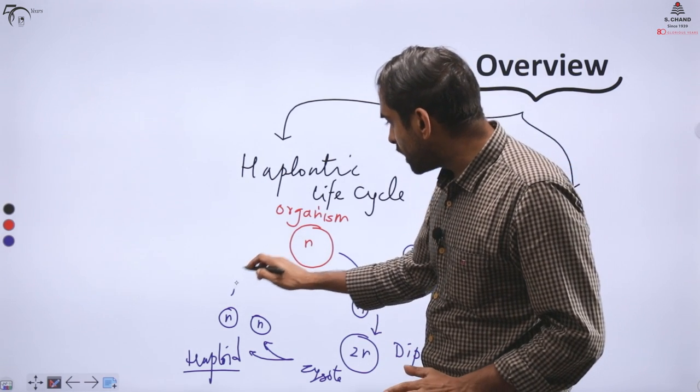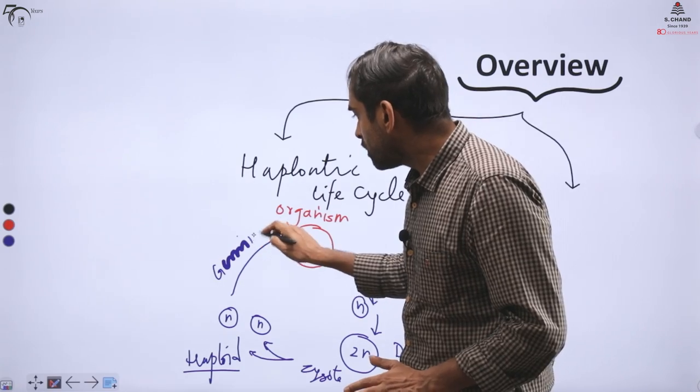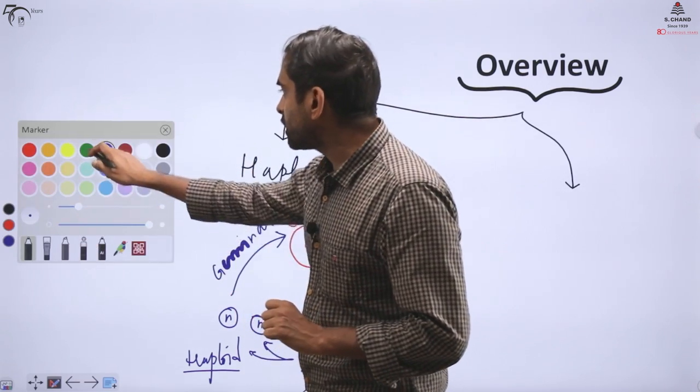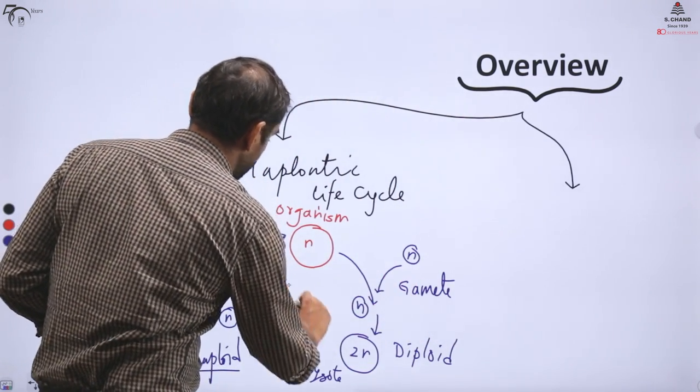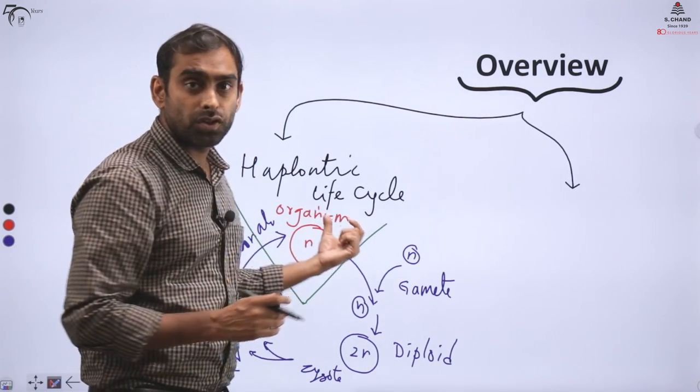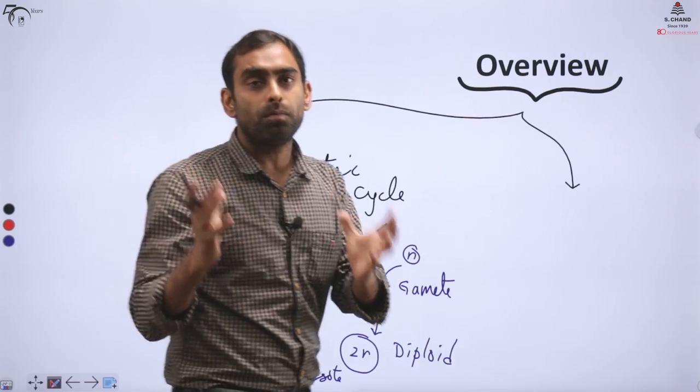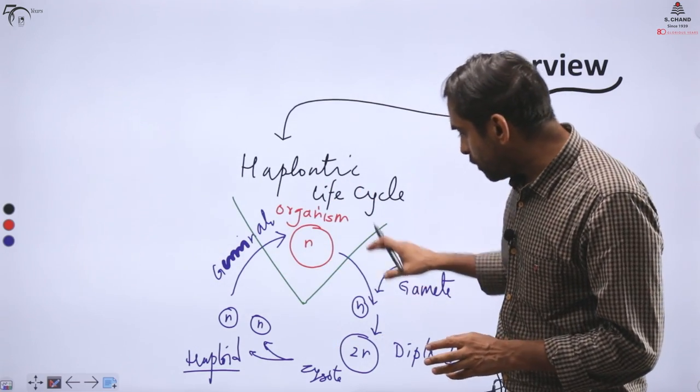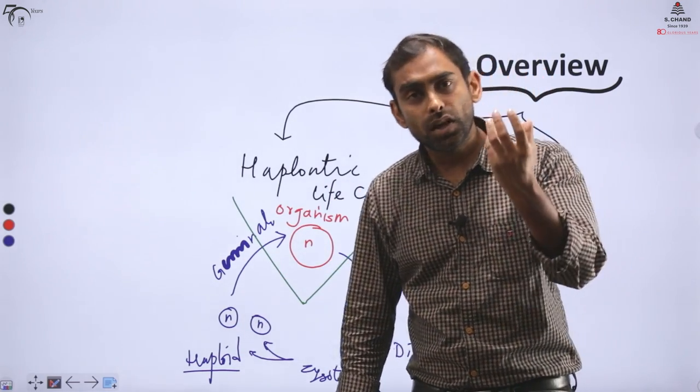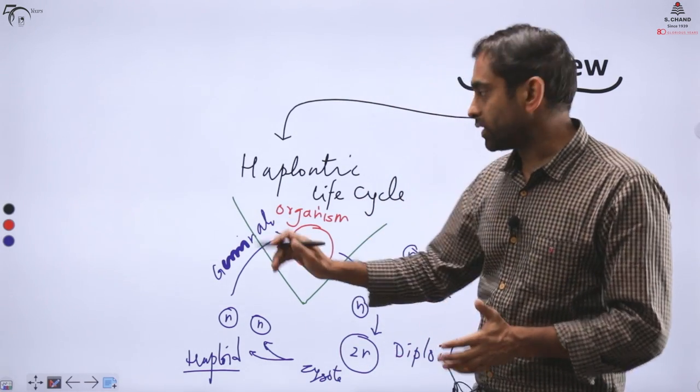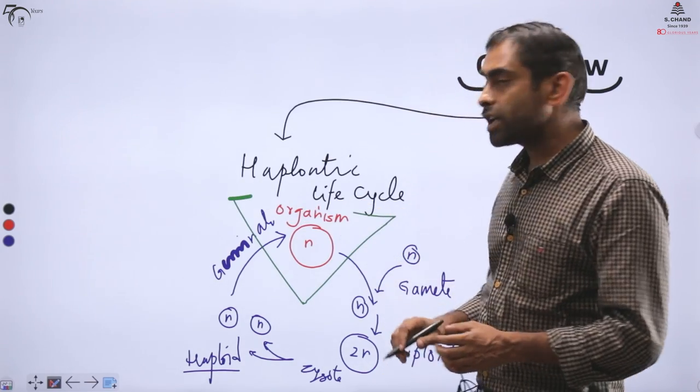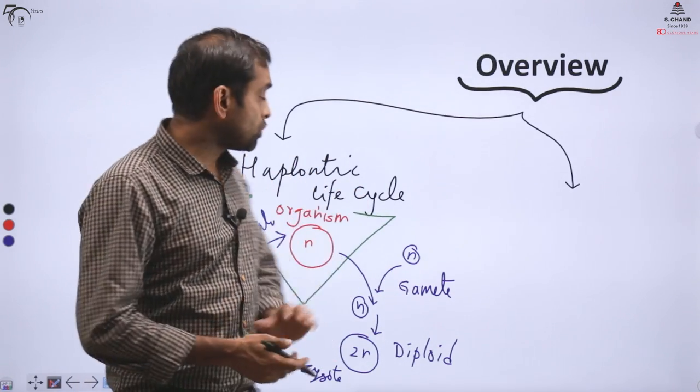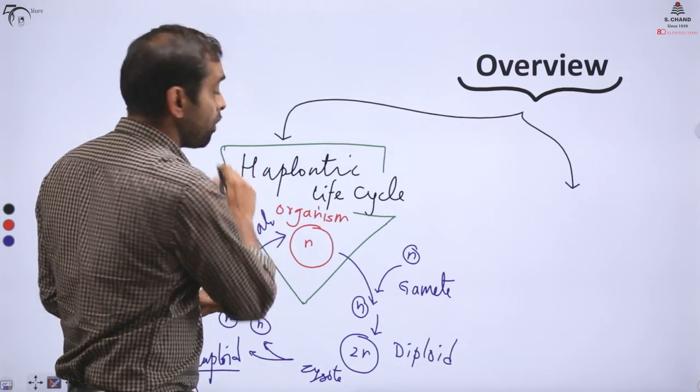These gametes will fuse together and make a diploid cell called zygote. This zygote will undergo reductional division. Just as meiosis occurs in our body for gamete formation, here the zygote, before making any organism, undergoes meiosis to ensure new cells capable of creating organisms have already become haploid. These haploid cells can germinate and give rise to new organisms.